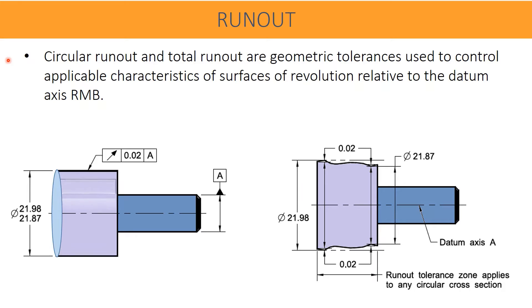Circular runout and total runout are geometrical tolerances used to control applicable characteristics of surfaces of revolution relative to the datum axis, RMB. RMB means regardless of maximum material boundary. In this drawing, the control runout tolerance is specified 0.02 with datum A for the diameter 21.87 to 21.98. These are the limit dimensions of size.